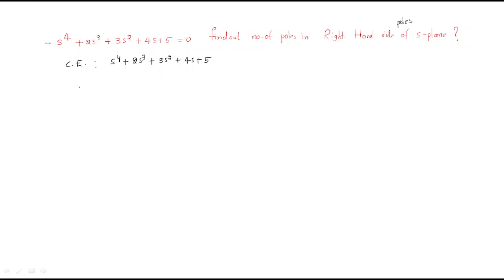We will use the Routh-Hurwitz (RH) criteria. In the RH table, write down s⁴, s³, s², s¹, and s⁰. For s⁴, write 1; for s³, write 2; for s², write 3; for s¹, write 4; and the last one is 5.